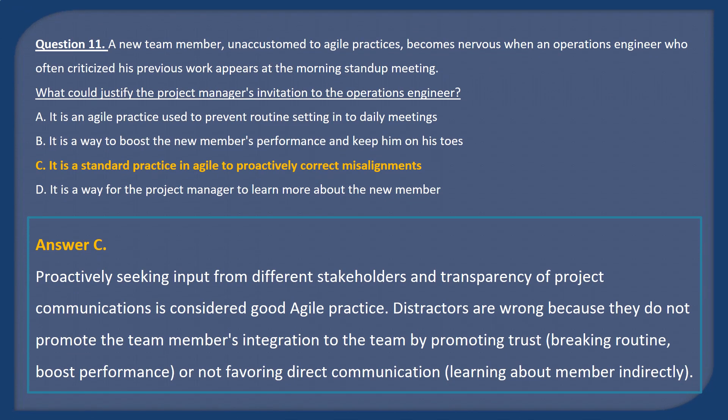Answer C. Proactively seeking input from different stakeholders and transparency of project communications is considered good Agile practice. Distractors are wrong because they do not promote the team member's integration to the team by promoting trust, breaking routine, boosting performance, or favoring direct communication and learning about members indirectly.